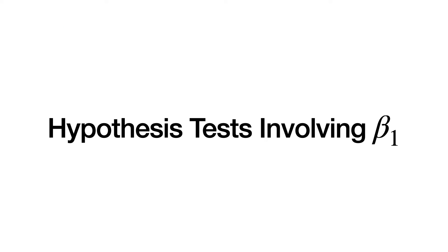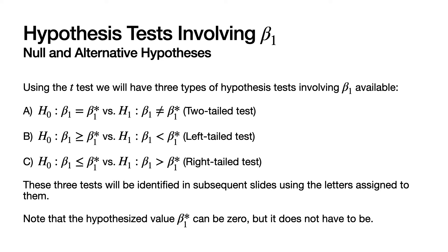Let's start off by looking at hypothesis tests involving beta_1. Using the t-test, we will have three types of hypothesis tests involving beta_1. The first is called a two-tailed test. The null hypothesis is that beta_1 is equal to some specified value, which we're denoting here by beta_1 star, against the alternative hypothesis that beta_1 is not equal to that specified value.